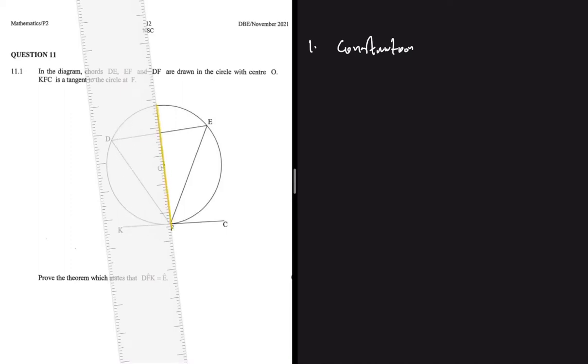Then we can name that point on top of the circle point Z, and then we can join D and Z. You don't have to name it point Z, you can name it any letter you want. We have done step number one and now we can move to step number two.